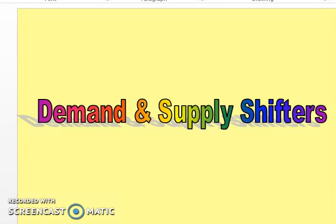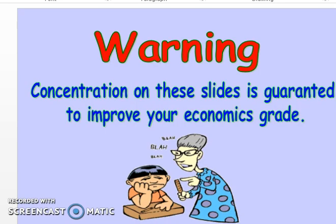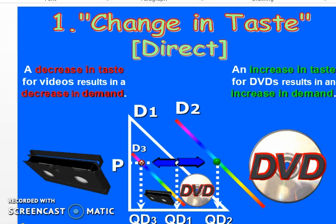Bismillahirrahmanirrahim. In this second lecture, we are going to discuss the shifters of the demand. We have discussed what are the shifters of the demand — when the whole demand curve shifts rightward or backward when price still remains the same. This is called shifting in the demand curve, and those factors are called determinants, factors, or variables.